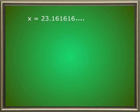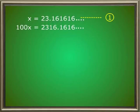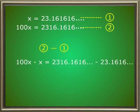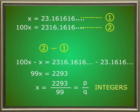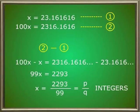Let us see how. Let x be 23.161616161616... and so on — mark this as equation 1. Now multiply equation 1 with 100: it becomes 100x = 2316.16161616... — mark this as equation 2. Equation 2 minus equation 1 gives 100x minus x = 2316.16161616... minus 23.161616..., so 99x = 2293, and x = 2293 divided by 99. Thus it is in the form of p by q where p and q are integers. Here you can see that this type of non-terminating decimal number can also be expressed in p by q form.